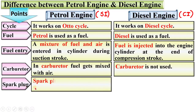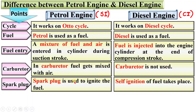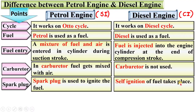Next, spark plug. A spark plug is used to ignite the fuel in case of petrol engine, and that is why petrol engine is sometimes known as SI engine — that means spark ignition engine. In case of diesel engine, self ignition of fuel takes place, so there is no spark plug.